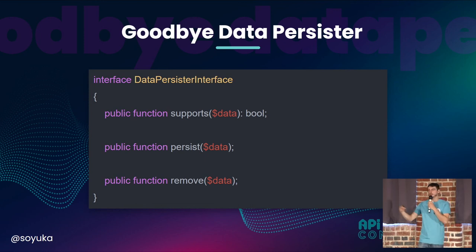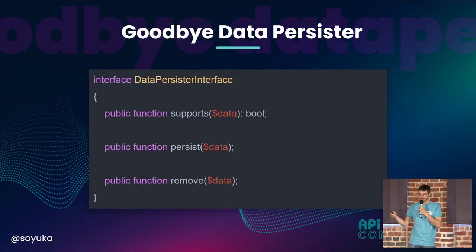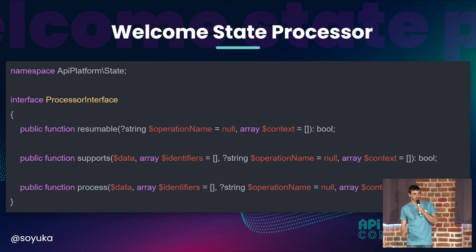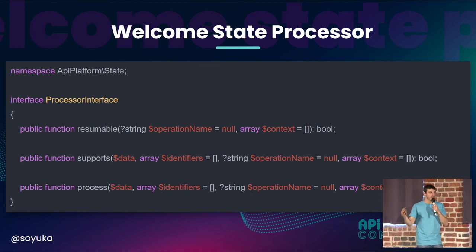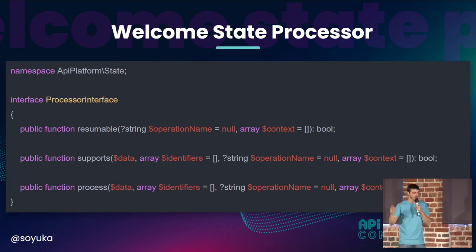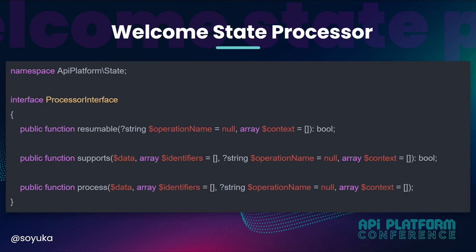You can send an email, you can do some asynchronous job, you can add data into some cache or whatever. So we added this new interface, which is the state processor, which is really a broad term because you can do much more here. With these three methods — resumable is when you want many processors to be called in a chain, so you can just say resume and it will stop.